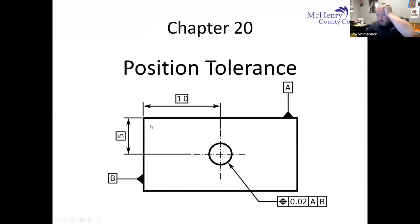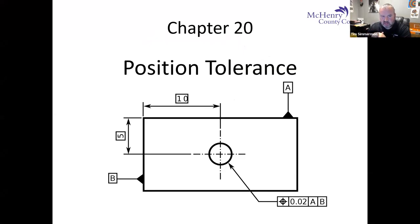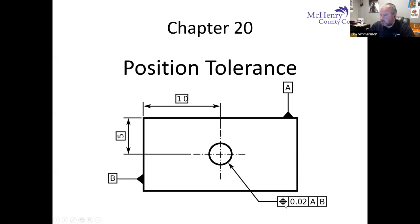Today we're going to talk about position tolerance. The three chapters in your book — 20, 21, and 22 — are actually all about position tolerance. Position tolerance is one of the more popular tolerances you'll see on drawings. It can be used in a variety of different ways. Looking at the feature control frame at the bottom: position tolerance within 0.02 inches in relation to datum A and B.